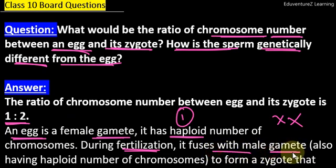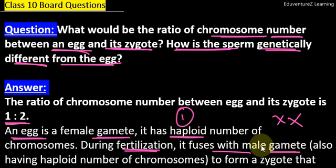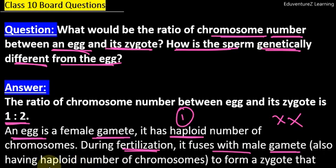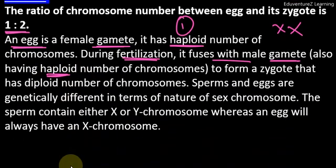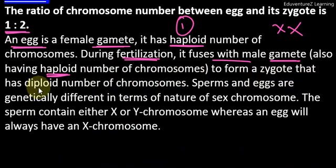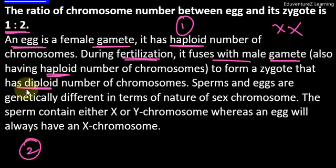In fertilization, the first process is that the male gamete and female gamete fuse. The male gamete has a haploid number of chromosomes, and when it fuses with the female gamete, the resulting zygote has a diploid number of chromosomes — meaning two sets of chromosomes.